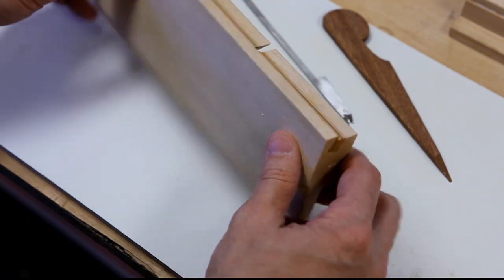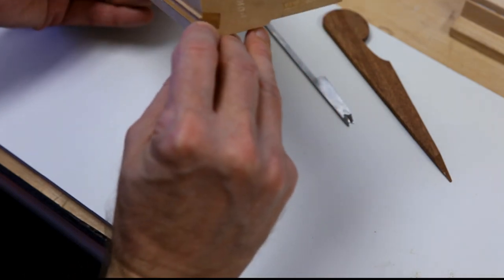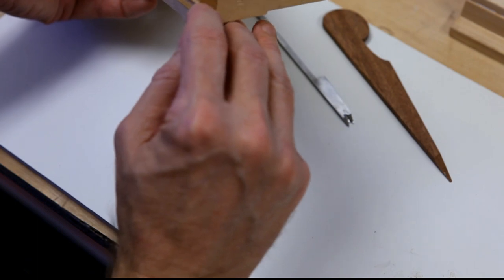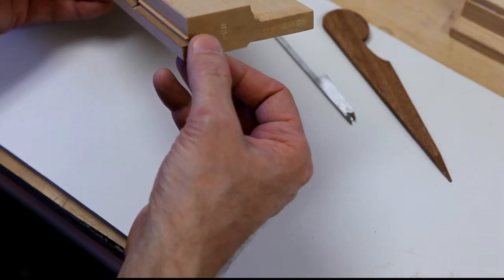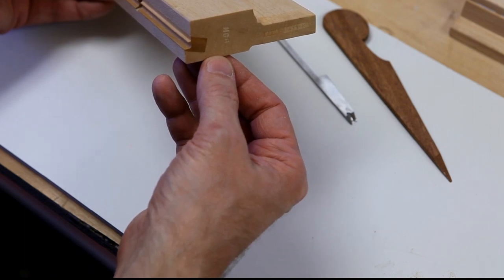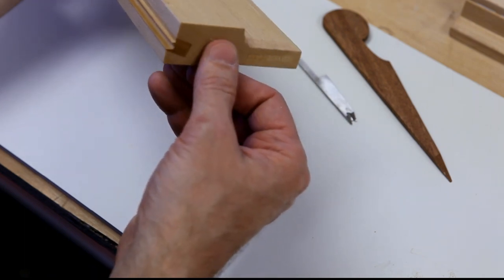Again, this is beech. And, just from memory, I'm thinking this is boxwood. I think that's what they used for the molding profile. It's not beech, whatever it is. Let's take a close look at this knife.